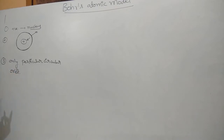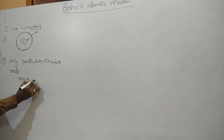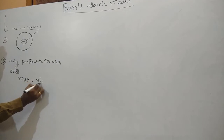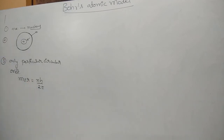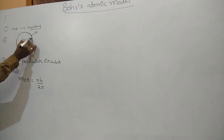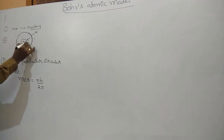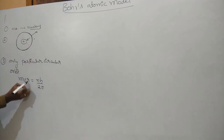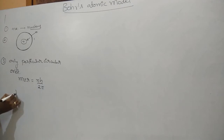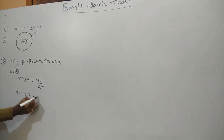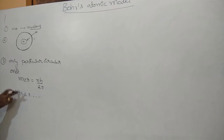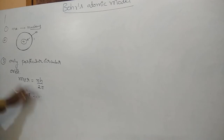Those particular orbits are the ones where the angular momentum of the electron is equal to n times h divided by 2π. Electrons revolve only in these orbits; other than this value, the electron will not revolve. Here n equals 1 for the first orbit, n equals 2 for the second orbit, n equals 3 for the third orbit, and so on.